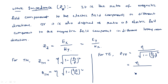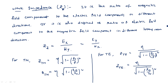For a TE wave, ZTE equals η divided by square root of (1 minus (fc/f) squared), or in terms of wavelength, η divided by square root of (1 minus (λ₀/λc) squared). These are the definitions and expressions of all the various parameters — whether it is a circular waveguide or rectangular waveguide, the definitions and expressions are common. For more detailed calculations, refer to the rectangular waveguide parameter discussions in the previous videos.